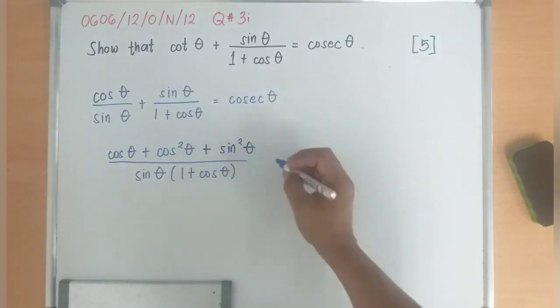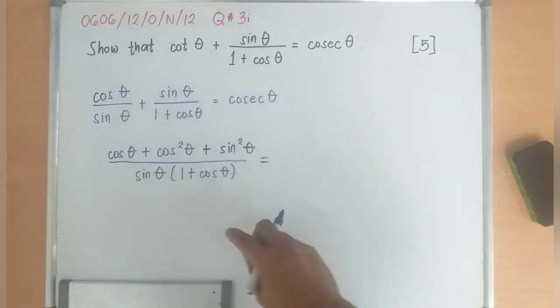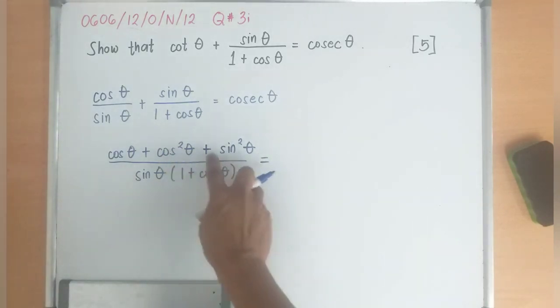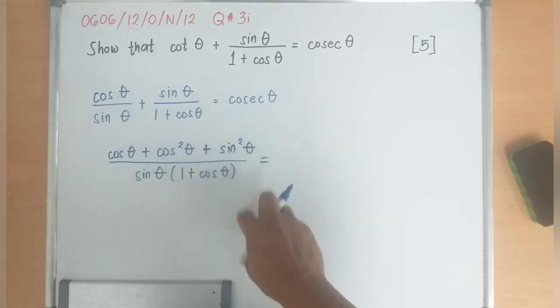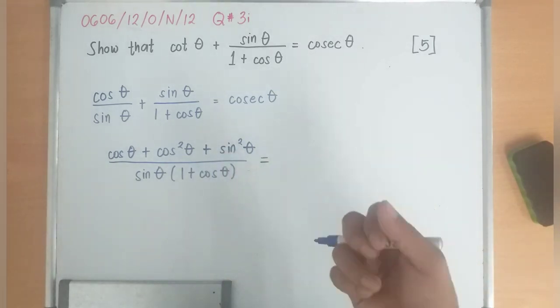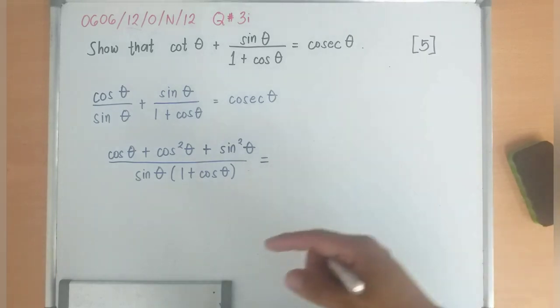Why did I just leave it like that? Because you will notice that cosine squared theta plus sine squared theta will be equivalent to 1 based on your trigonometric identities.